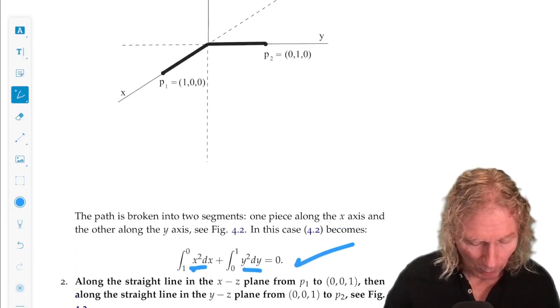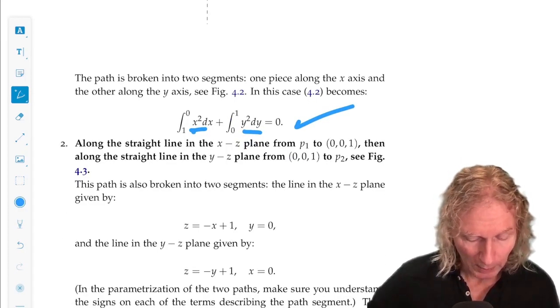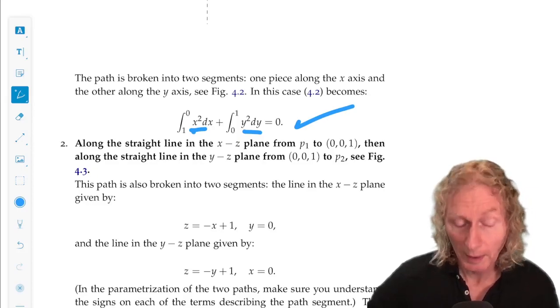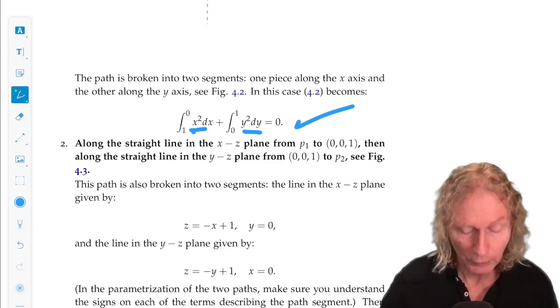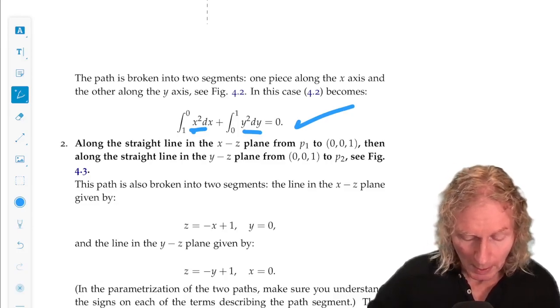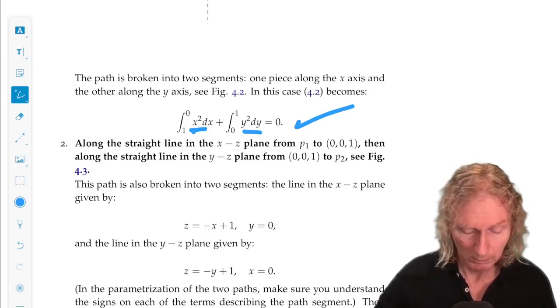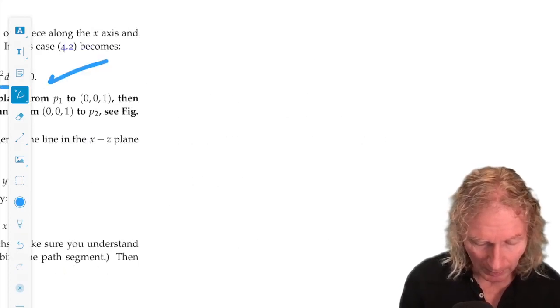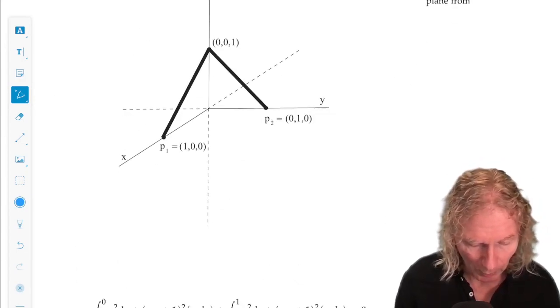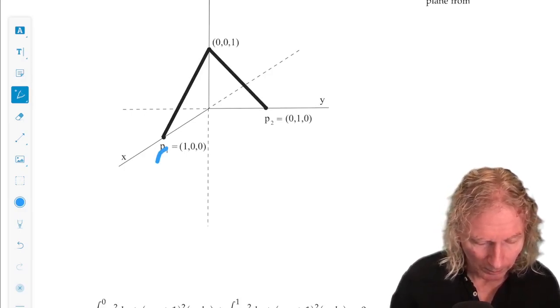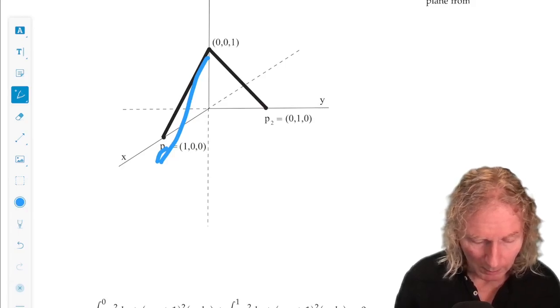Now we're going to compute it along a different path, along a straight line in the x-z plane from P1 to 0, 0, 1, and then from 0, 0, 1 to P2. Now that is best easily seen with a picture. So in the x-z plane along this path, and in the y-z plane along this path.